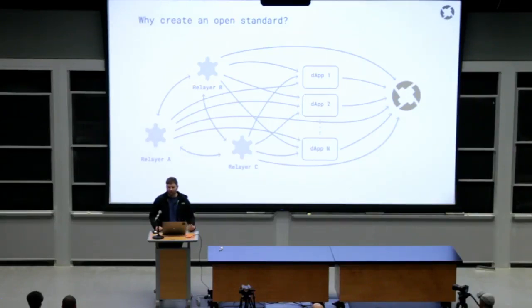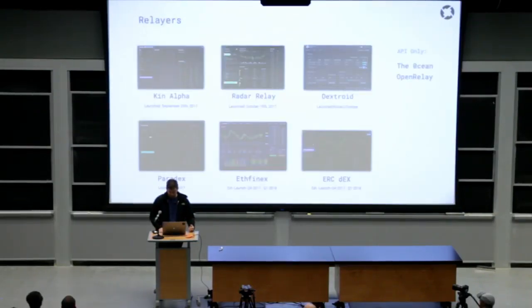It also allows for more robust and standardized developer tools. So the 0x team has created the 0x JavaScript library and the standard relayer API. And these tools make it very easy for anyone to very quickly spin up their own decentralized exchange. And it takes a lot of that upfront work out of the equation. So I'm going to very quickly go through some of the developer ecosystem progress we've seen.